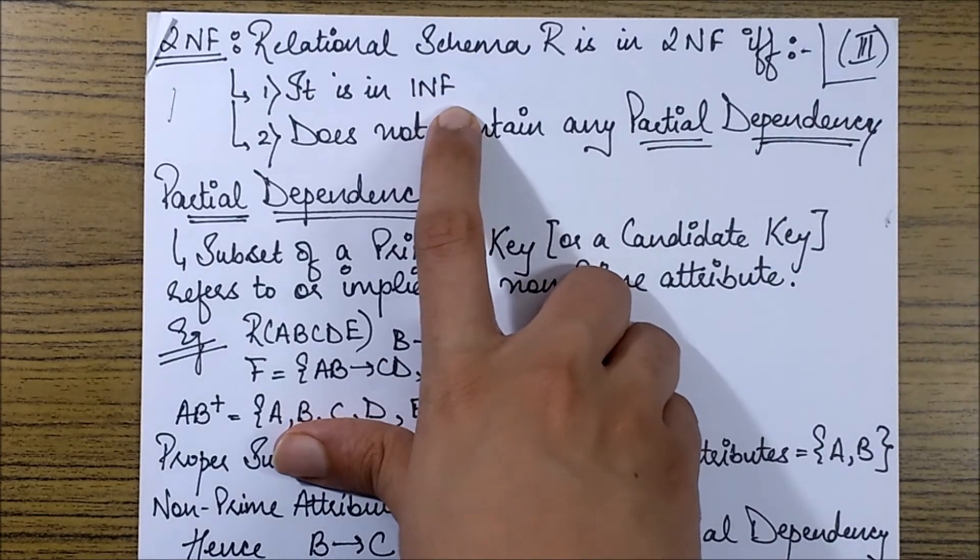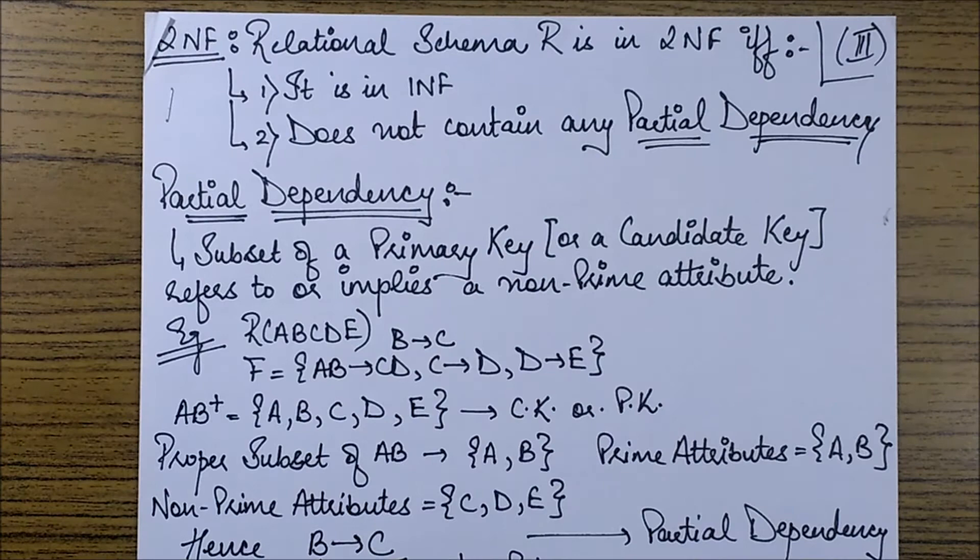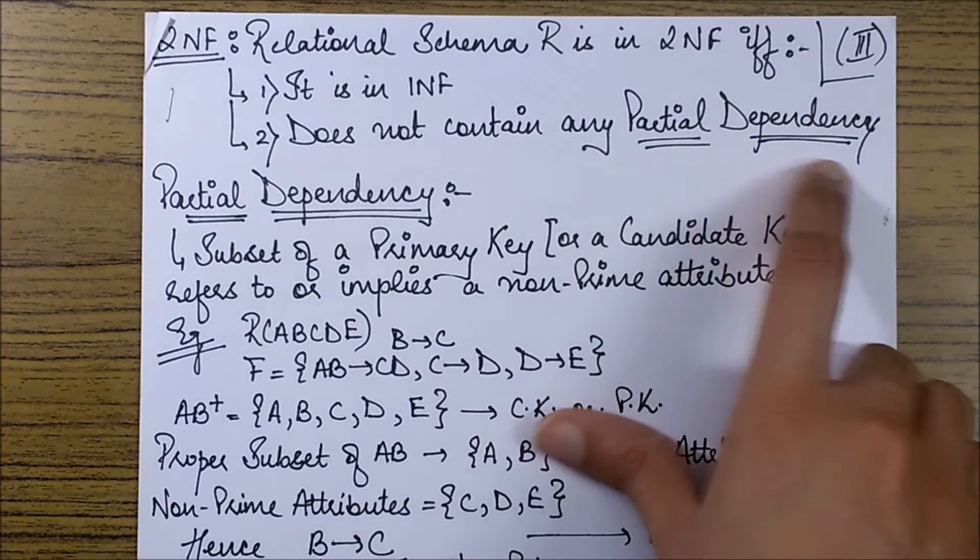Now for 1NF we have already studied how to convert a relational schema into 1NF. You can please view the previous video in case you have not seen that. And now next we move on to partial dependency.